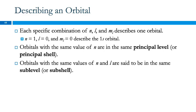We can describe an orbital using three quantum numbers. Each orbital is going to have its own set. So if we say n equals 1, l equals 0, and m sub l equals 0, this describes what we refer to as a 1s orbital — in the first principal energy level, l equals 0 means it's an s orbital, and m sub l gives the orientation. If orbitals have the same value of n, they're in the same principal level or principal shell, and orbitals with the same values of n and l are in the same sublevel or subshell.